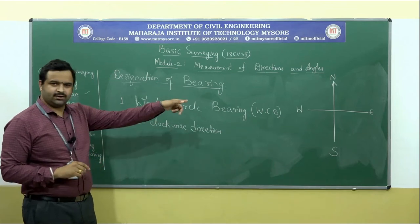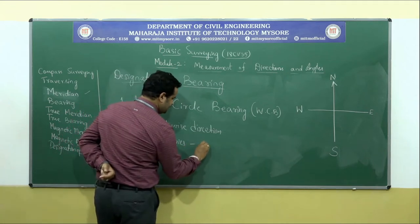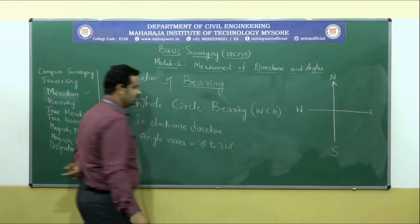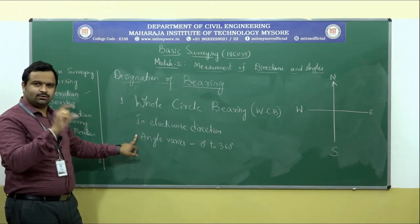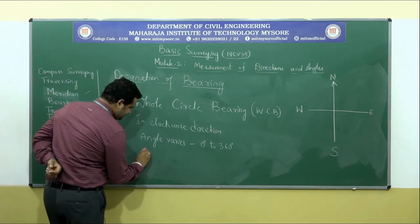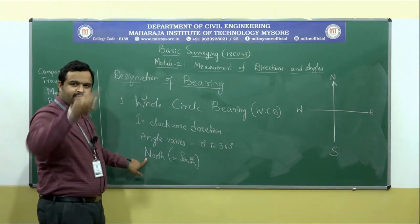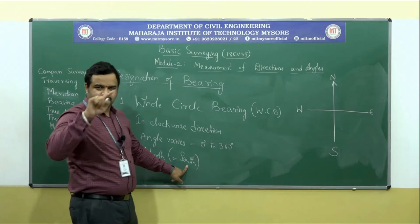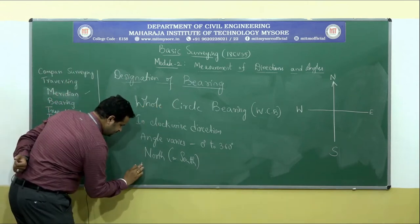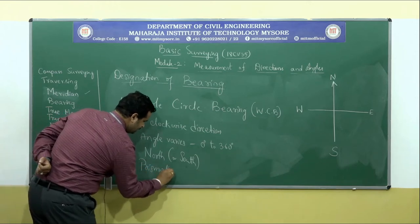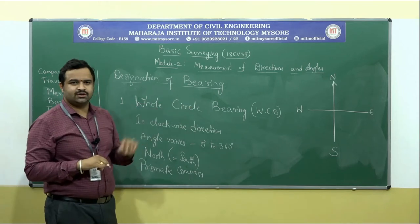As the name suggests, it is a whole circle. The angle varies between 0 degrees to 360 degrees. The first point is it should be measured in a clockwise direction. Second, the angle varies between 0 to 360 degrees. And the reference can be taken as North or South. If you take North as a reference, measure all your bearings with respect to North. If you take South as a reference, measure all the bearings with respect to South in a clockwise direction. The whole circle bearing system is adopted in the prismatic compass, where the readings are graduated in the whole circle bearing system.